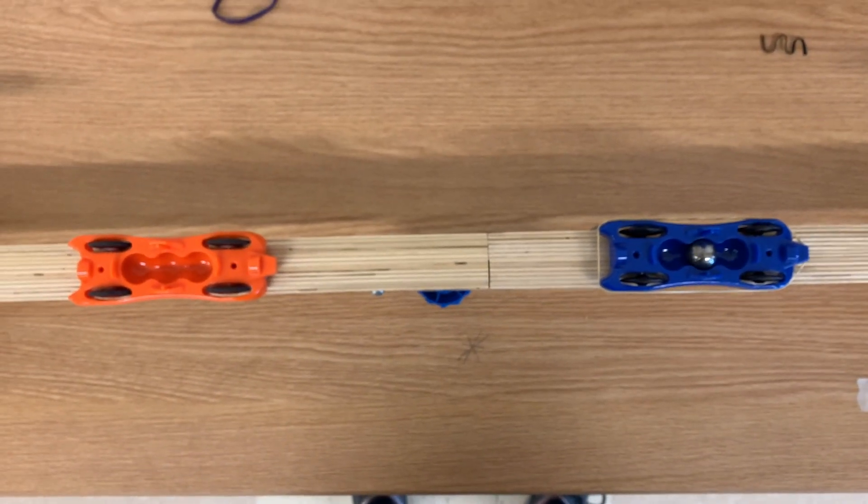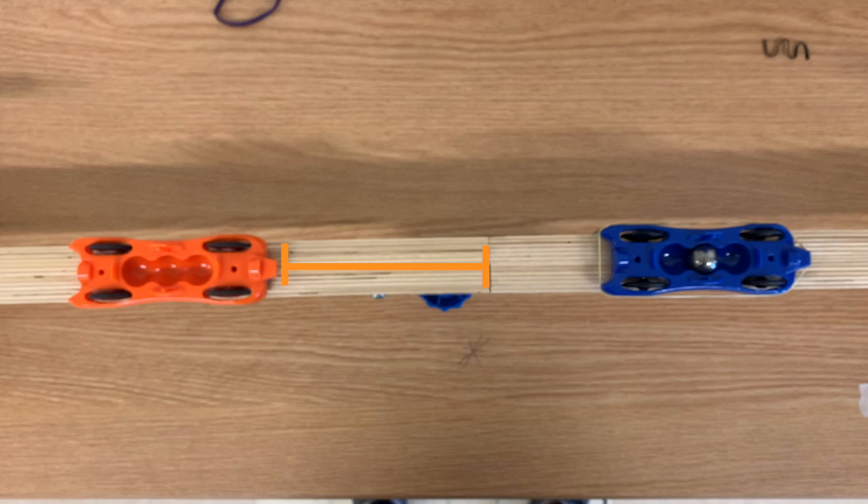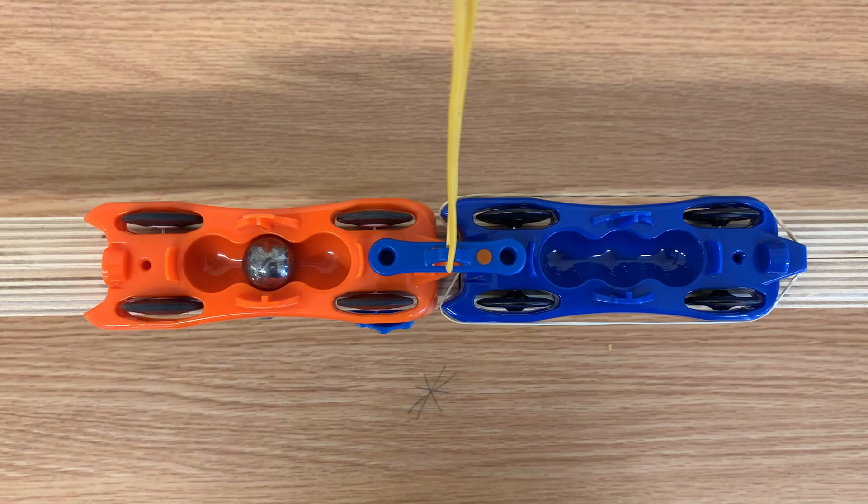This time, the car with no extra mass went the same distance as before, but the car with added mass went less far. Let's make sure it's not just a fluke in the car. We'll switch the mass to the orange car this time.